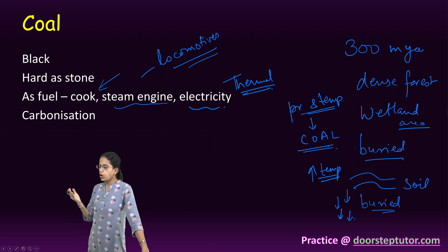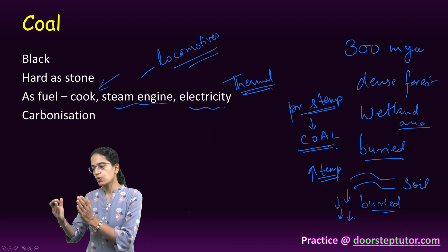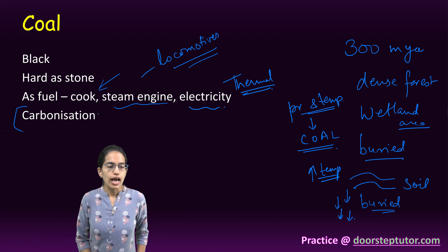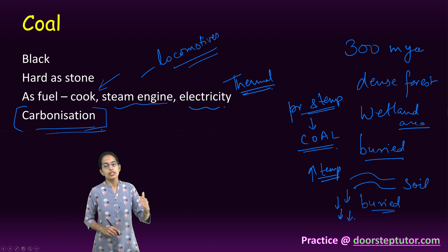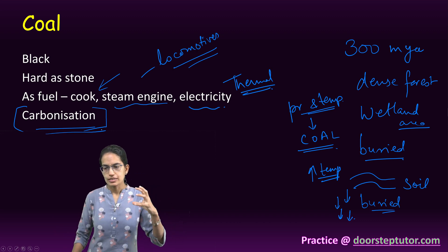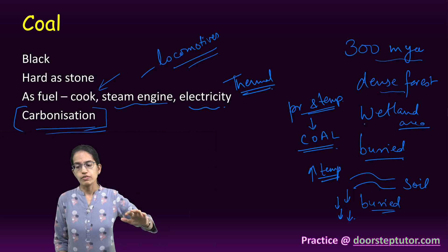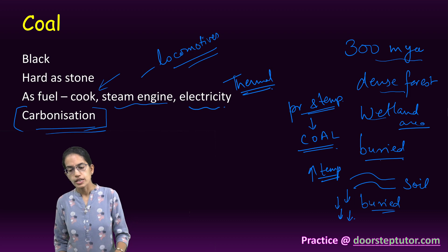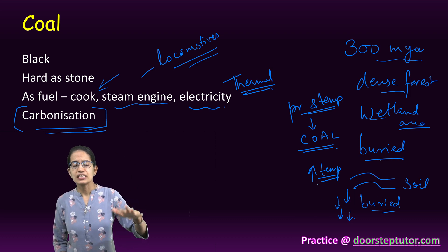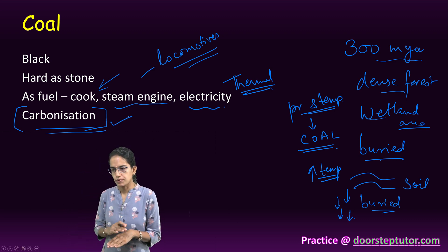This process of conversion of dead vegetative material into coal is called the process of carbonization, a very important term. To repeat in a gist: 300 million years ago, under the dense forest cover in low-lying wetland areas, these forests got buried under the soil. With increasing temperature and pressure, coal was formed through the process of carbonization.